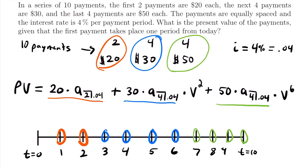Another way to think about it: with different sets of payments, the power of the present value factor you multiply by equals how many payments have already been made. Two payments were made before the $30 group, so the power is two. Two plus four equals six payments before the $50 group, so the power is six. Understanding this makes these problems much easier to set up.